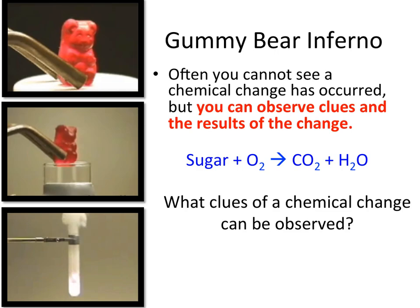You may have seen this demonstration before — a gummy bear being put into potassium chlorate. We use this to figure out what the clues of a chemical reaction are. You can't actually see the chemical reaction occurring, but you can look at clues from that reaction to make up your mind whether or not a reaction took place. In this reaction, we put sugar and potassium chlorate together and produce a combustion reaction.